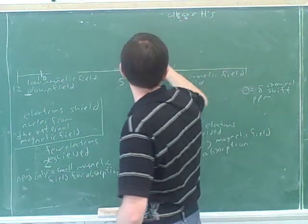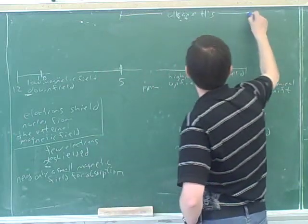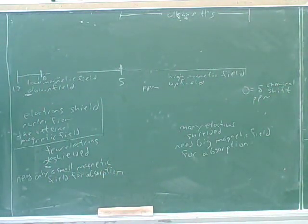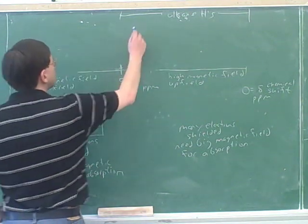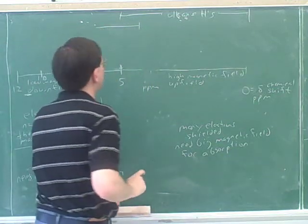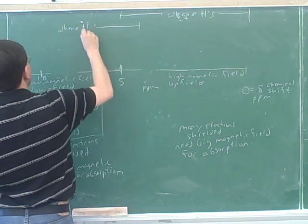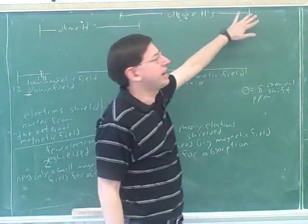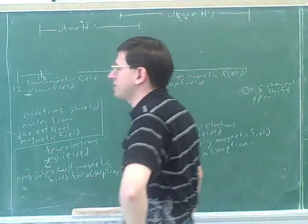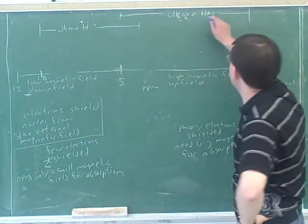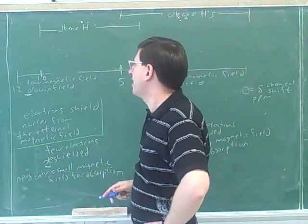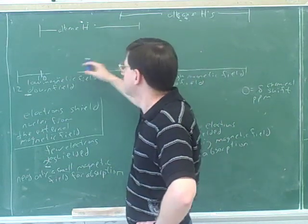Generally speaking, alkane hydrogens absorb in the 0 to 5 region, and alkene hydrogens are in the 4.5 to 10 region. Even if there are electronegative atoms, alkane hydrogens with electronegative atoms would tend to be on the left-hand side of the 0–5 region, and without electronegative atoms on the right-hand side. For alkenes, a normal alkene with no electronegatives would be around 5, whereas with electronegative atoms it might be closer to 10.